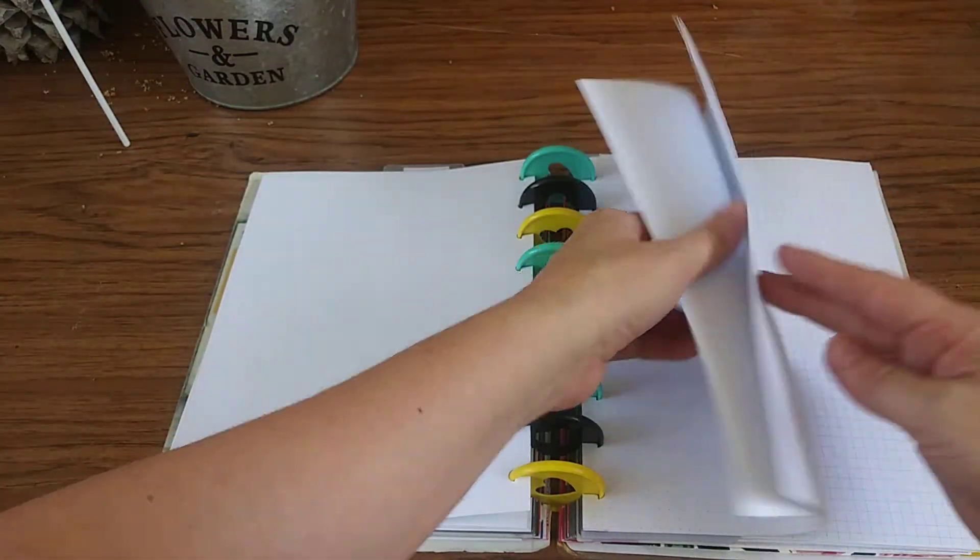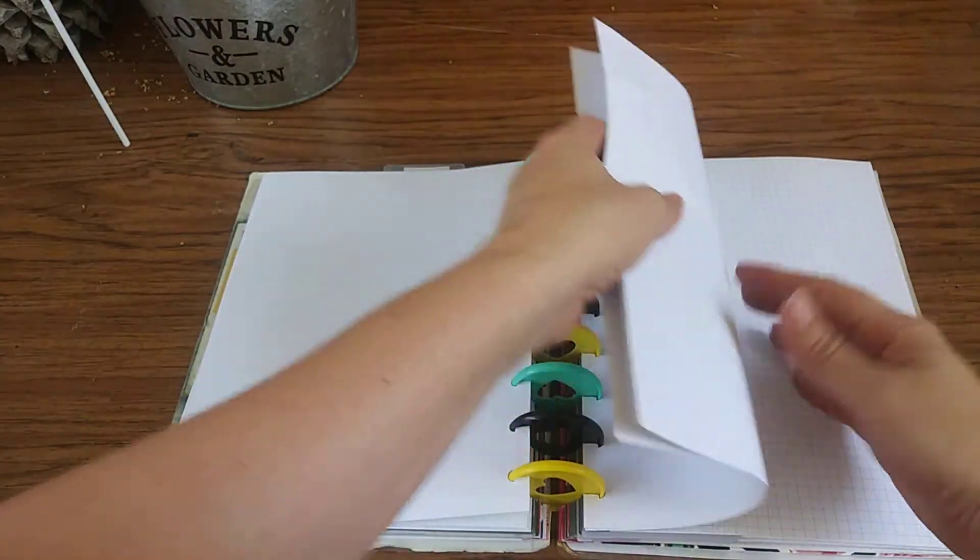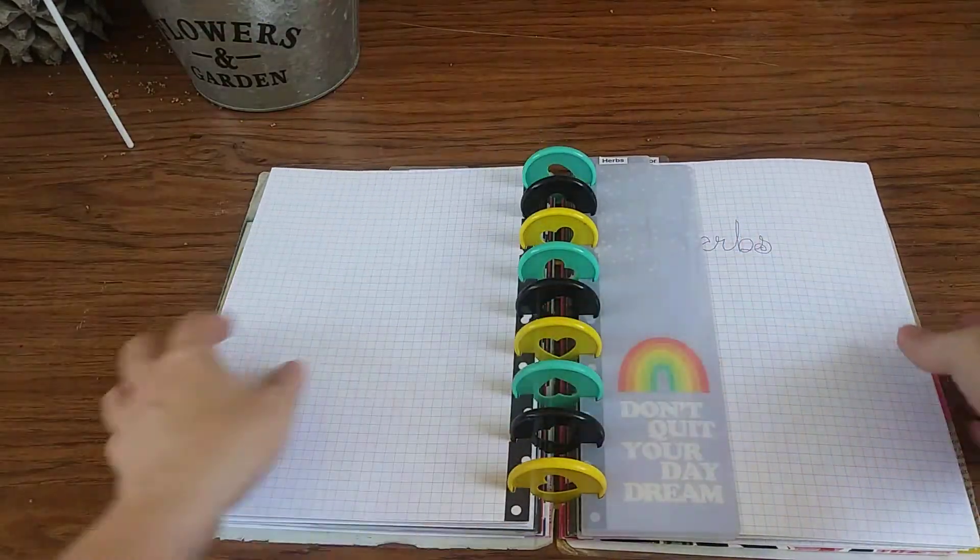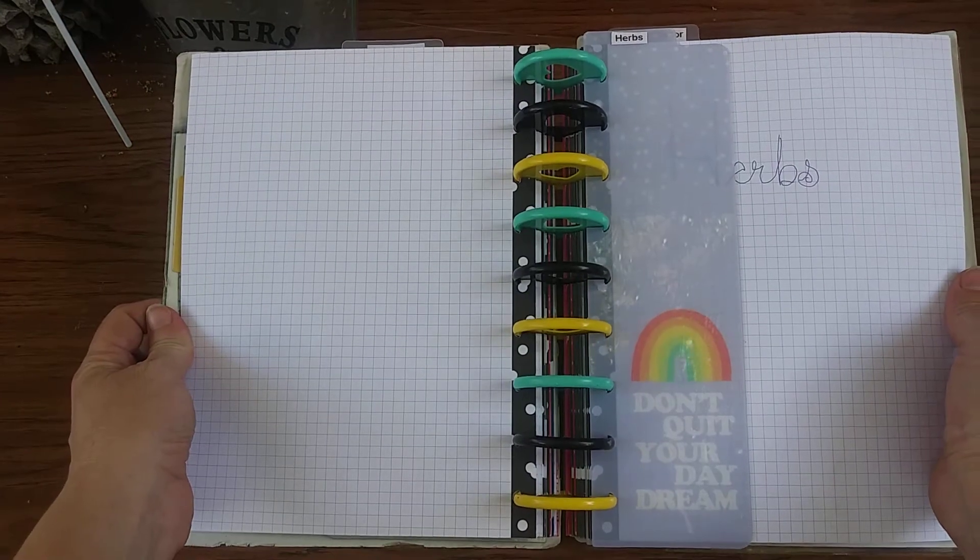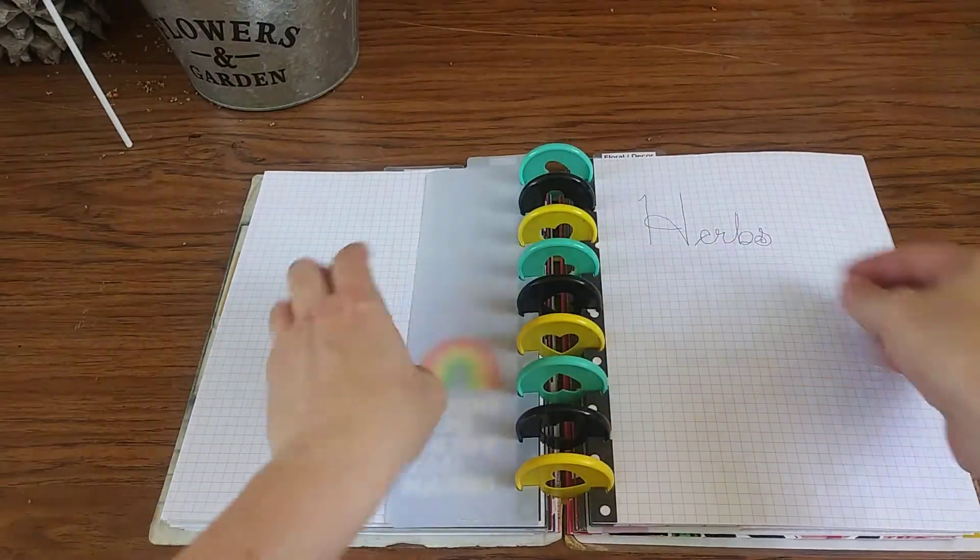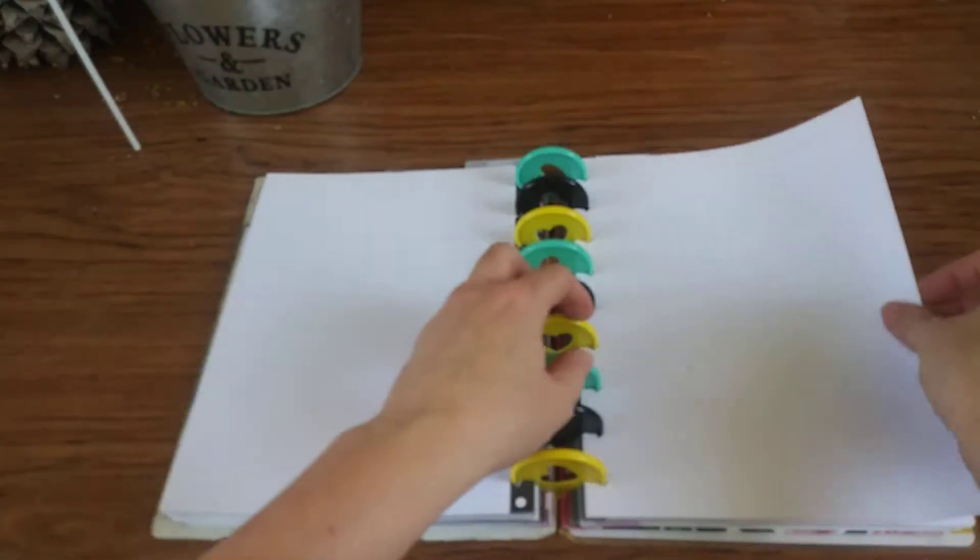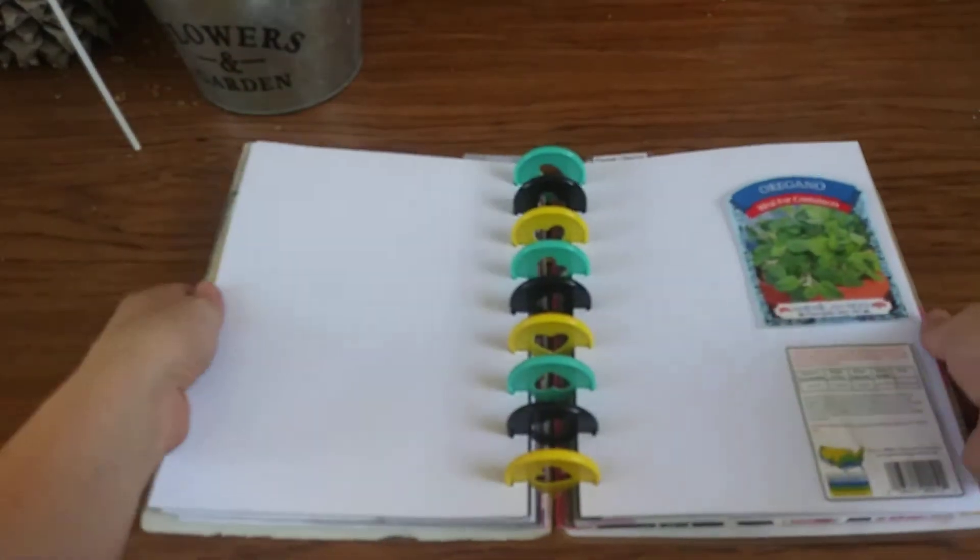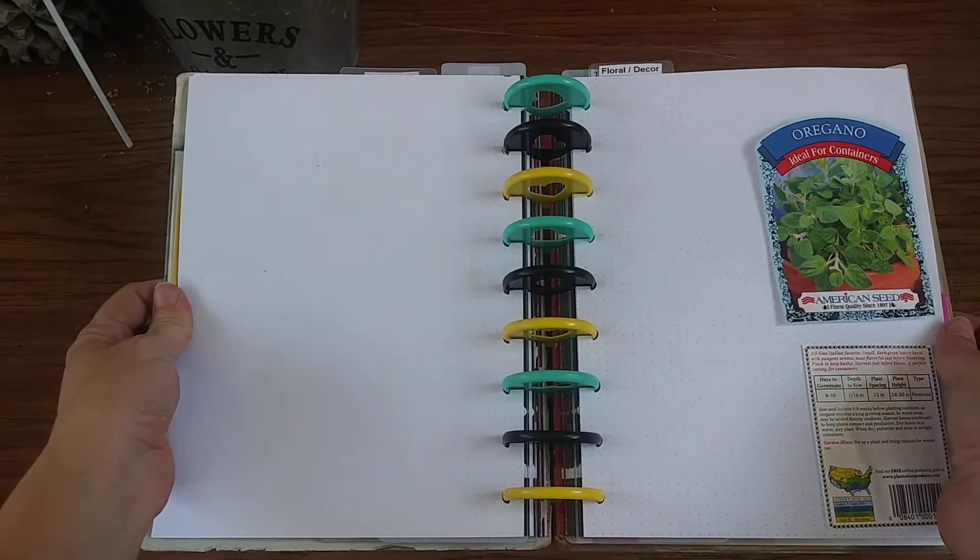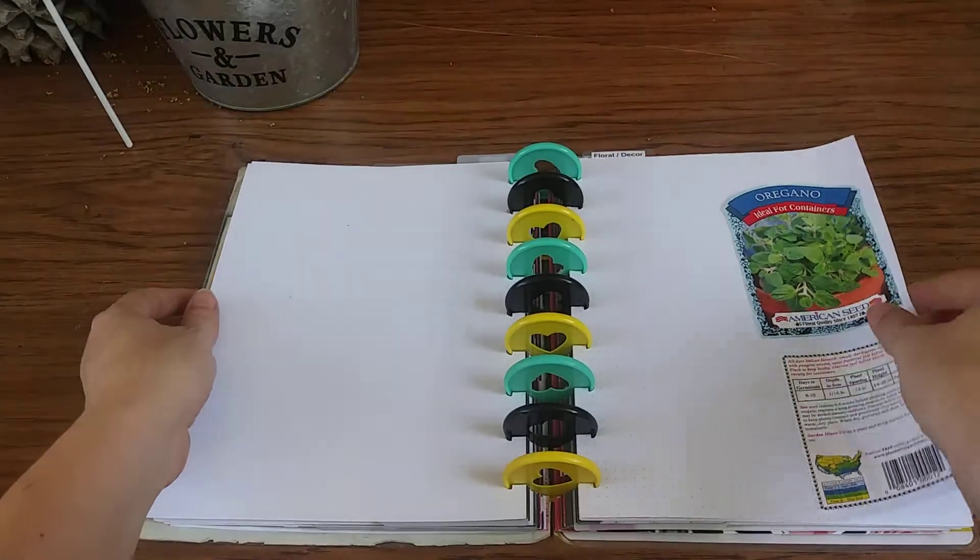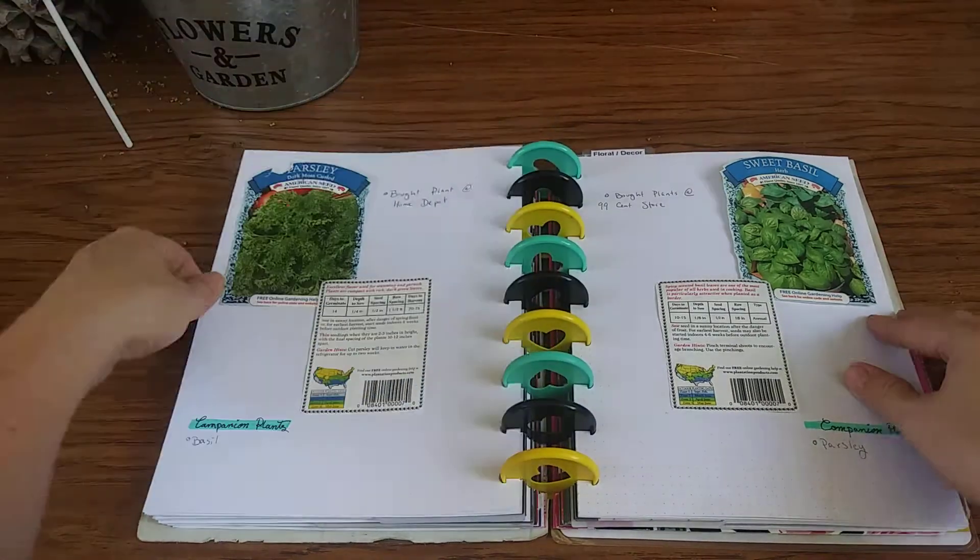I think that's it for vegetables, got a few extra pages in here in case I need to make those notes. Moving on to my herbs. And it's just kind of a matter of the stuff I've collected for my garden, having a place to put it.